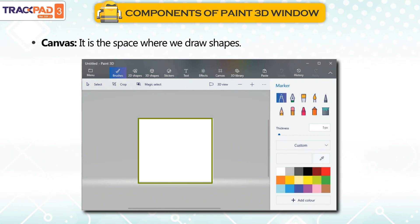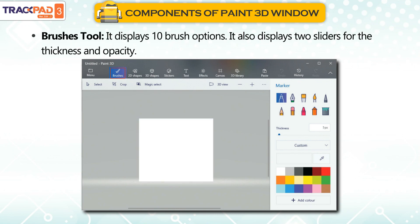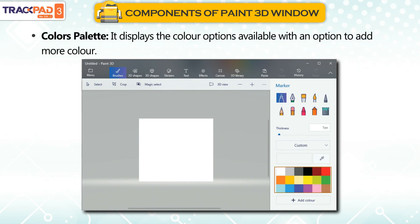Canvas: It is the space where we draw shapes. Brushes Tool: It displays 10 brush options and also displays 2 sliders for thickness and opacity. Colors Palette: It displays the color options available with an option to add more color.